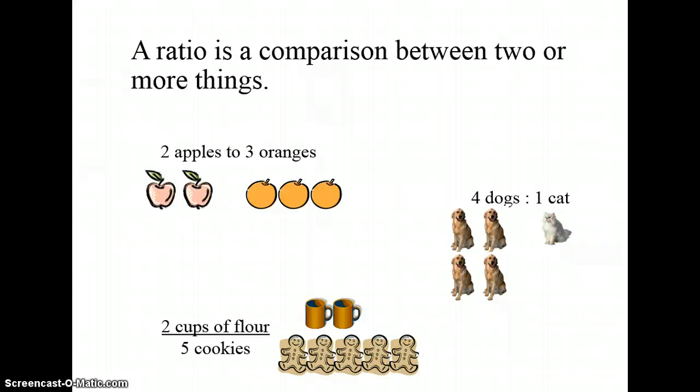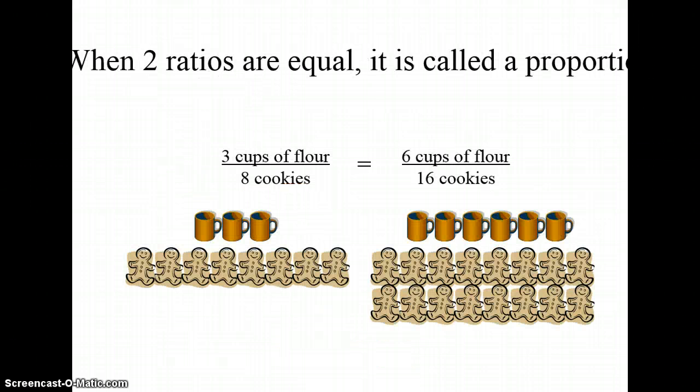And if you'll recall, a ratio is a comparison between two or more things. So they can be different units. Apples to oranges, dogs to cats, cups of flour to total cookies I can make. And when two ratios are equal, it's called a proportion.